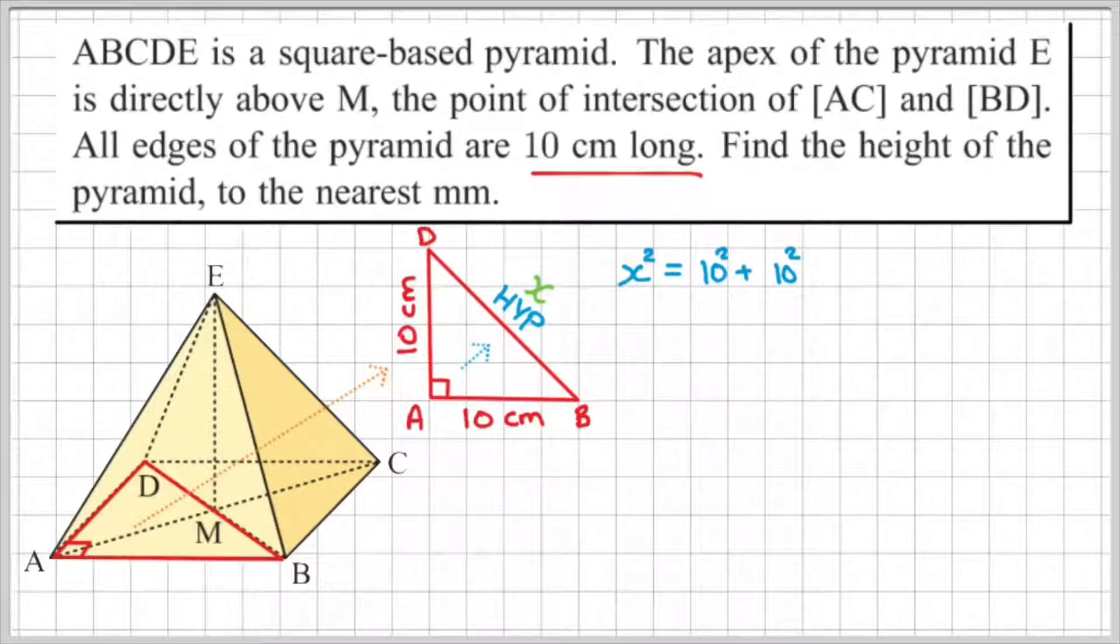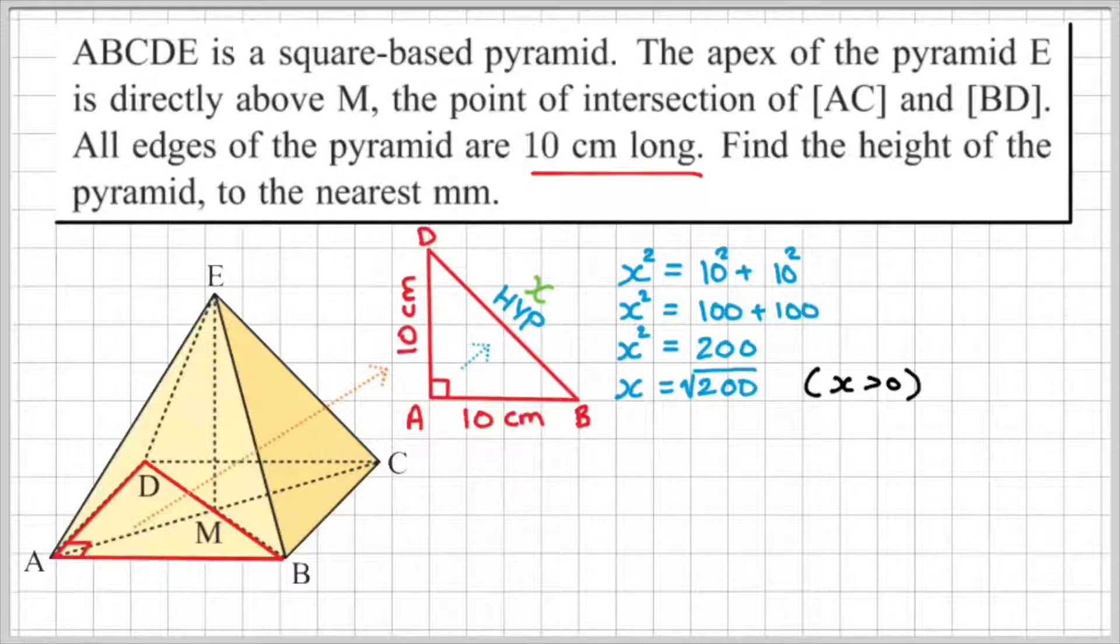Now I can use Pythagoras to set up an equation to solve for X. So X squared is equal to 10 squared plus 10 squared. X squared is equal to 100 plus 100, which is 200. And then the inverse of X squared is to square root the opposite side. So X is equal to the square root of 200. Remember, X is going to be a positive value, so we only take the positive square root. Since we're going to be rounding the final answer to the nearest millimeter, we can go ahead and find the square root of 200 to two decimal places. So we have 14.14 centimeters, which is basically rounded off to the nearest millimeter.